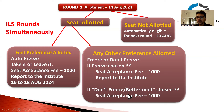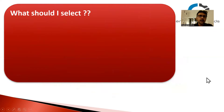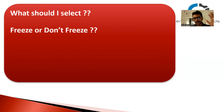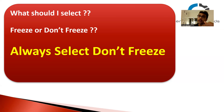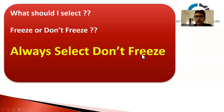Now a common question people ask: if we are allotted option number 2 or 3, should we select freeze or don't freeze? Please listen very carefully. If you see both buttons - freeze and don't freeze - all of you should select Don't Freeze. I won't give conditions - everyone should select don't freeze in CAP Round 1, and don't freeze in CAP Round 2 as well. This is a slightly difficult concept so listen carefully.